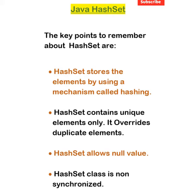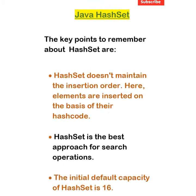Here are some key points about HashSet. HashSet stores elements using a mechanism called hashing. It contains unique elements only and overrides duplicate elements. HashSet allows null values. The Set class is non-synchronized, so we need to be careful while using it in a multi-threaded environment.